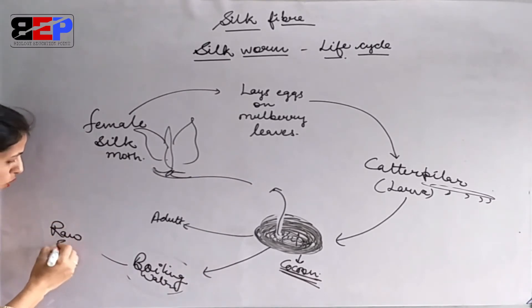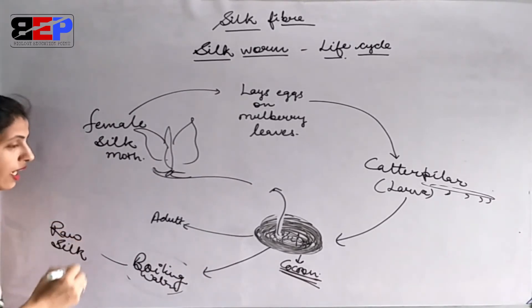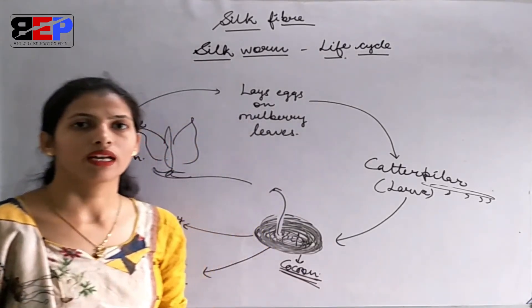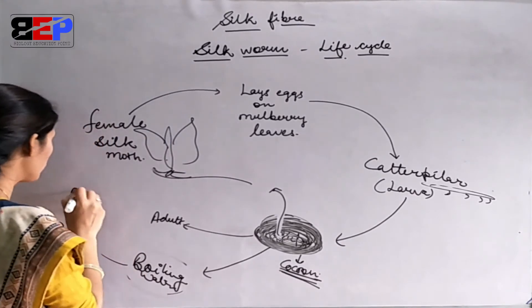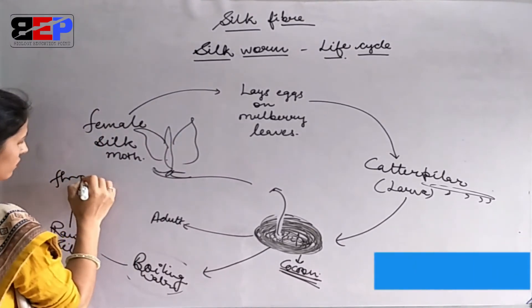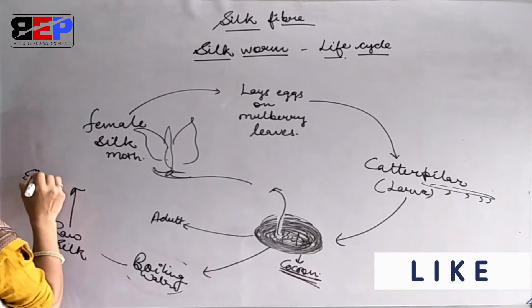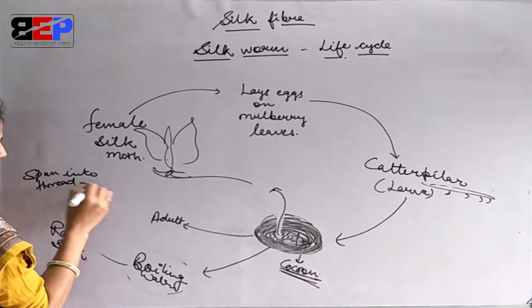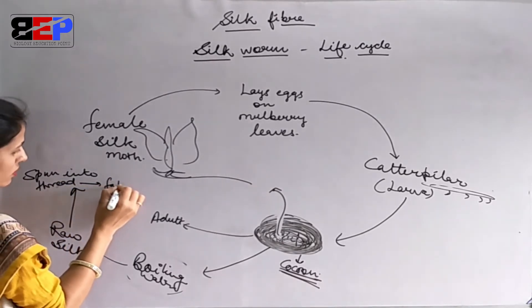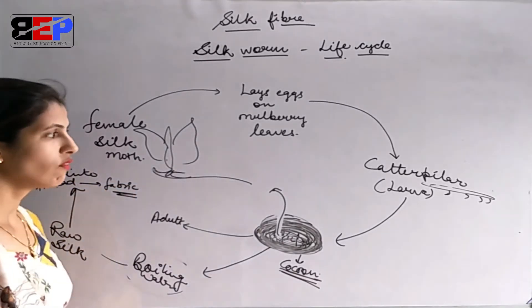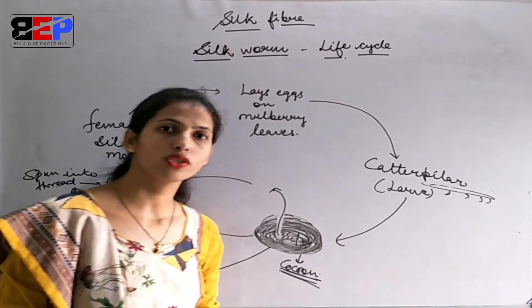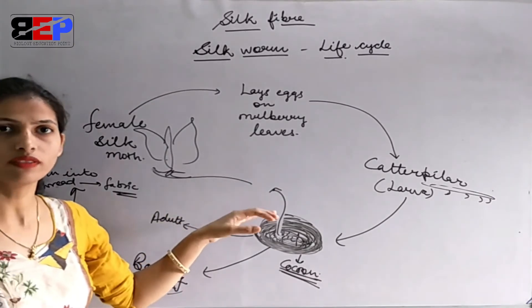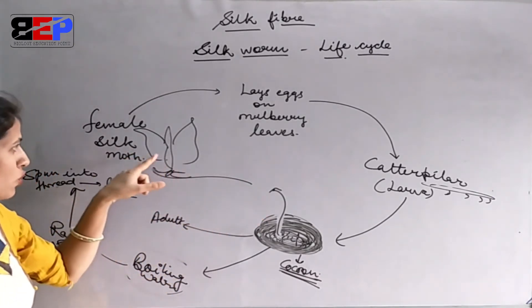The thread obtained from the cocoon is called raw silk. This raw silk is spun into thread, and the thread is then made into fabric. This is the complete process of silk — how silk is obtained from the silk worm through its life history.